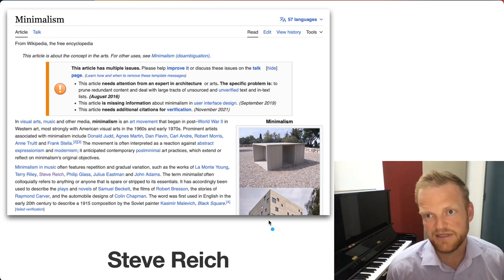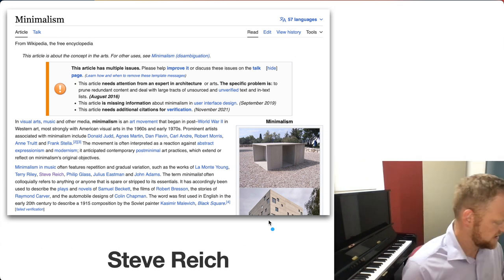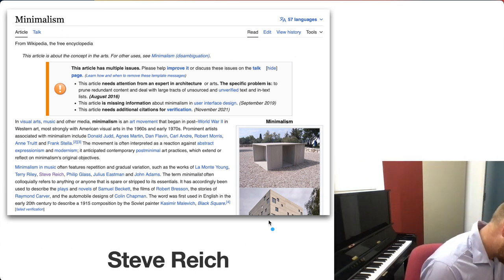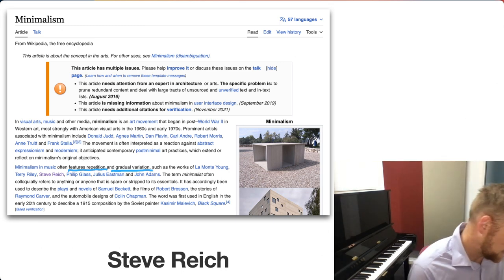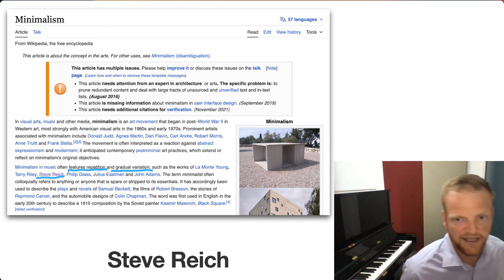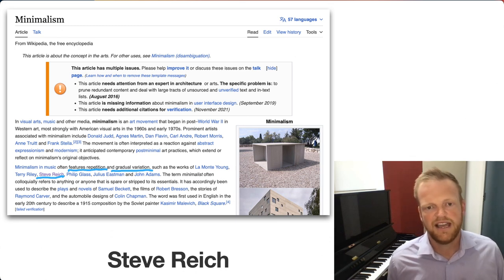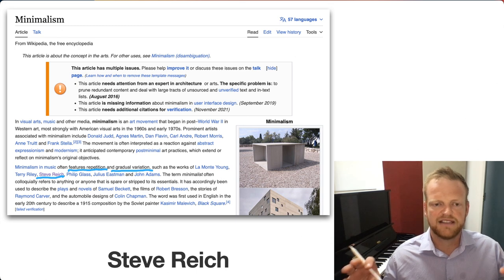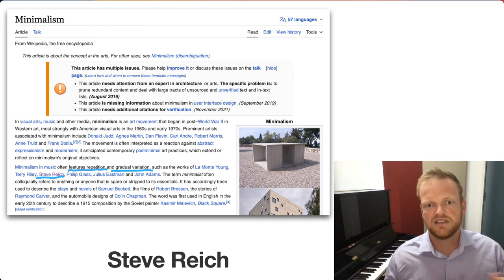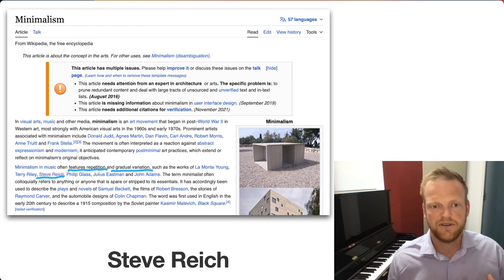Let's start with minimalism. Minimalism is essentially repetition and gradual variation. Steve Reich is a good example of this. He has a piece called Come Out and he gets two tapes and plays them at the same time. They slowly go out of sync and create all these interesting rhythms and sounds and textures. So that's an example of minimalism.